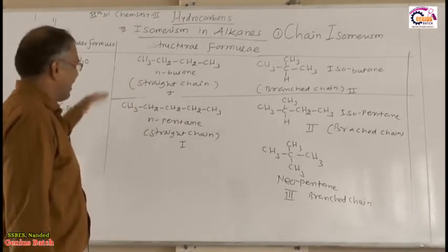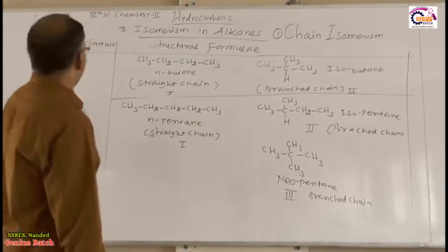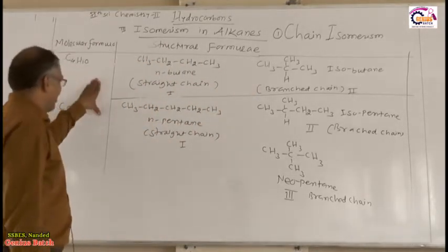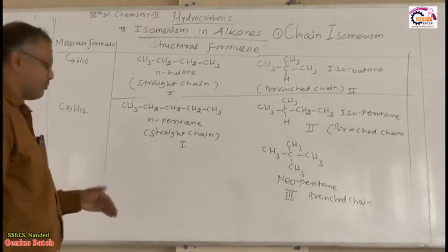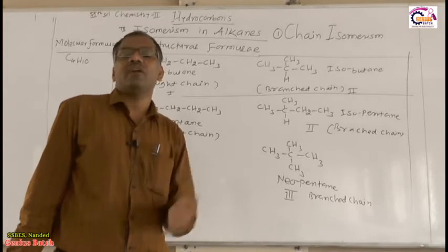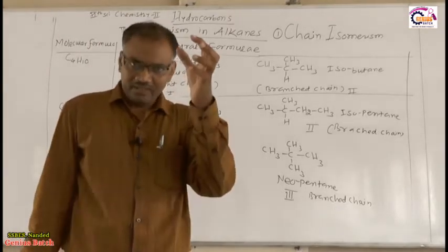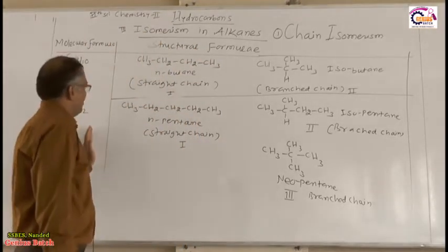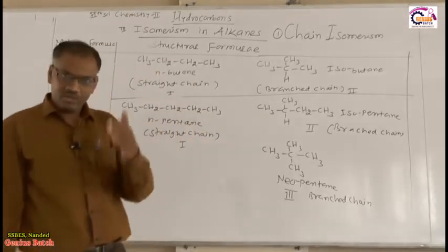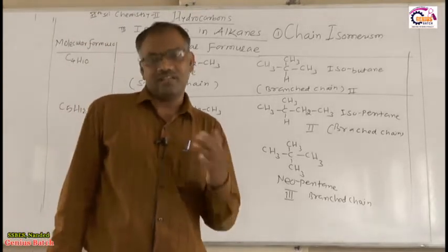In your notebook, prepare a chart with molecular formula and structural formula. I have completed C4H10 and C5H12 as examples. You have to write the chain isomers up to heptane — that is C6H14 and C7H16. If you do this practice, you can easily understand chain isomerism.